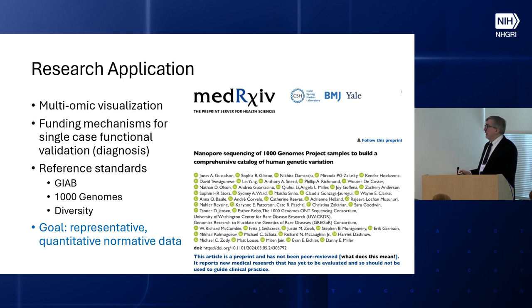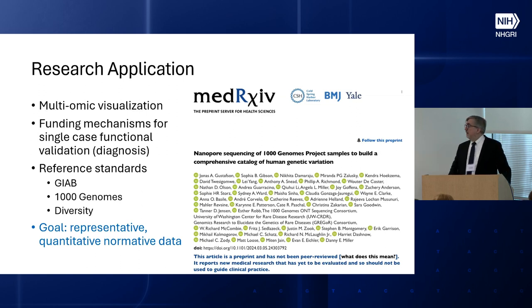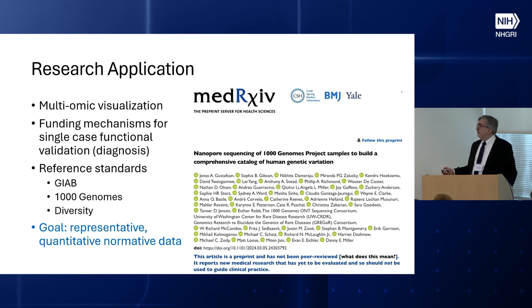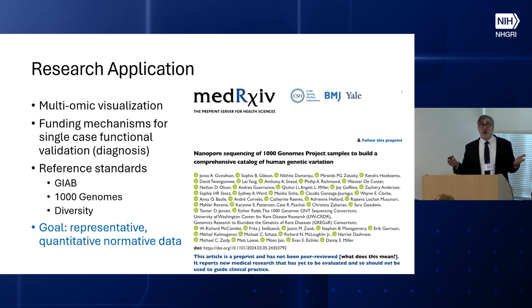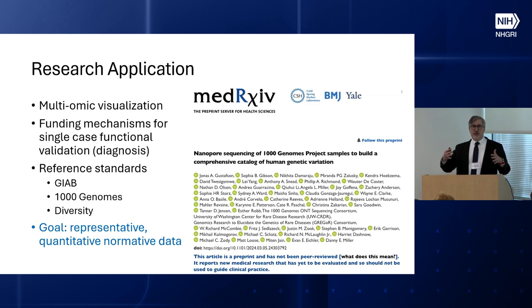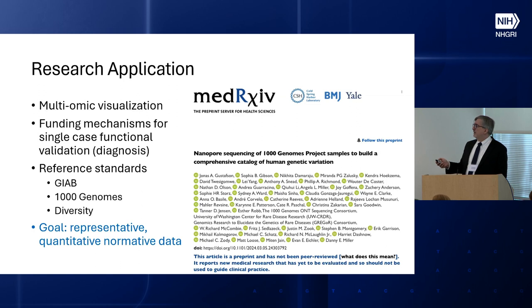Reference standards are something sorely missed when trying to evaluate new data sets. A recent success is Danny Miller at the University of Washington using nanopore sequencing for 1000 Genomes Project samples. But really what we all want are representative, quantitative, normative data so we can tell what's normal variation and what's exceptional — and that requires real investment.